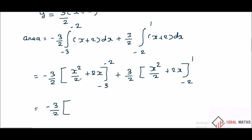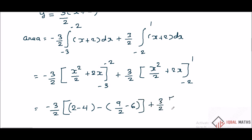Now applying limits: minus 2 squared is 4, so 4 by 2 is 2, plus 2 into 2 equals minus 4. Minus lower limit: minus 3 squared is 9, 9 by 2, and 2 into minus 3 is minus 6. Plus 3 by 2: 1 squared is 1, so 1 by 2, plus 1 into 2 equals 2. Minus: minus 2 squared is 4, 4 by 2, minus 2 into 2 equals minus 4.